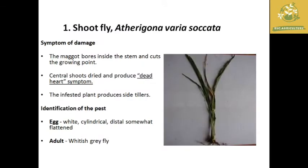First, I am going to tell you about the shoot fly, whose scientific name is Atherigona varia socata. The major symptom is the dead heart symptom, where the central shoot of the sorghum is dried. When we cut open the dead sorghum shoots, the infestation causes more side tillers to develop, and maggots are found inside the stems.